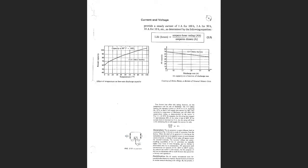Look at this graph. There's the equation we talked about — the theoretical equation. But what does this graph show you? The amp hour rating depends on temperature and on the discharge rate — how much current you're pulling from the battery. Write that down: the amp hour rating is temperature dependent, and the amp hour rating depends on the current you're drawing from the battery.